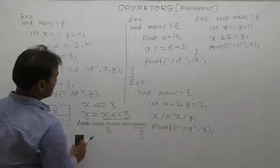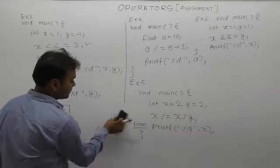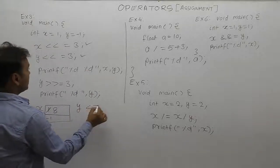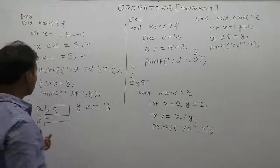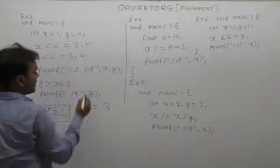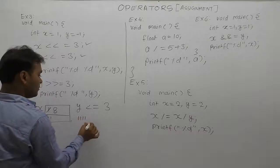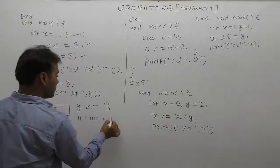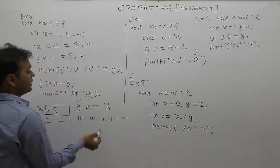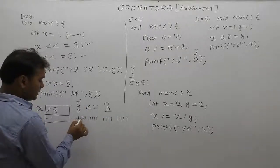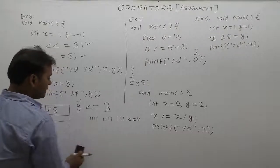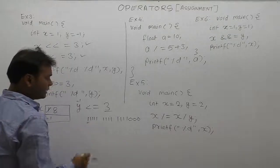The second operation is y left-shift equals 3. While x had a positive value, y has a negative value of minus 1. As we know, the binary number of minus 1 is all 1s. After left-shift by 3, three left bits are removed and three zero bits are inserted on the right side.